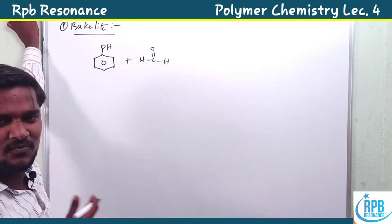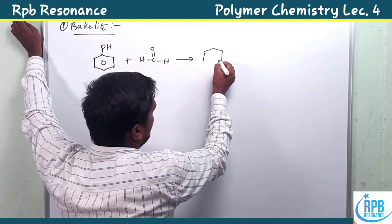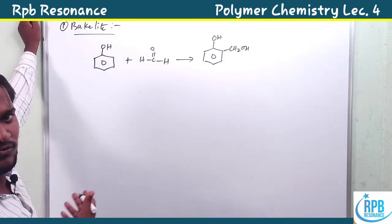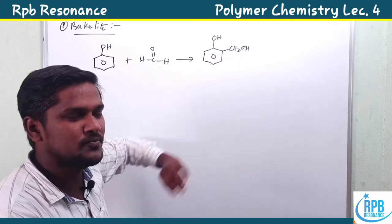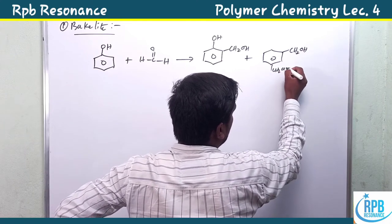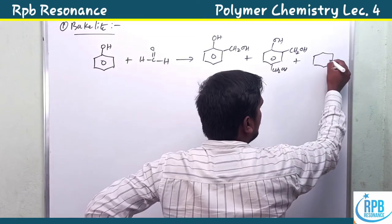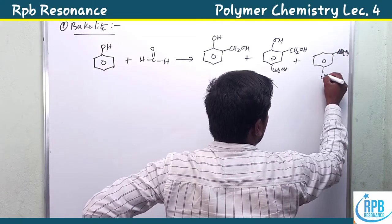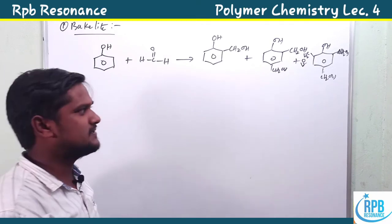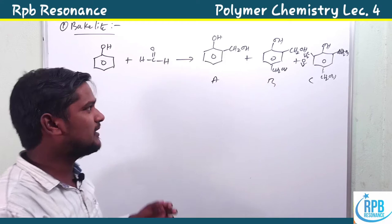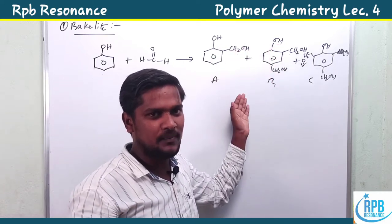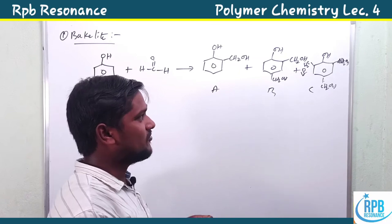The reaction undergoes electrophilic aromatic substitution. Phenol has an OH group which is an ortho-para director, so the formaldehyde attacks at the ortho position or the para position, producing CH2OH substituted products. Three kinds of products are possible: ortho-substituted, ortho-para substituted, and di-ortho-para substituted.